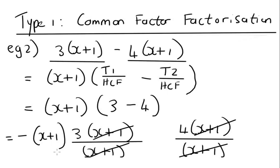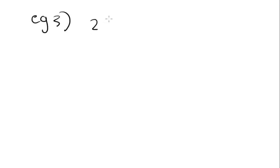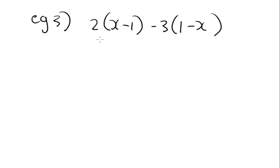Now I want to look at the third type, and then in the next video we'll give you some exercises to do. For this example you've got 2 multiplied by x minus 1 minus 3 multiplied by 1 minus x. What you'll notice is that you've got x minus 1 in the first bracket, but 1 minus x in the second bracket. What we'd like to do is make this x minus 1 as well, so let's explore something before we go further.